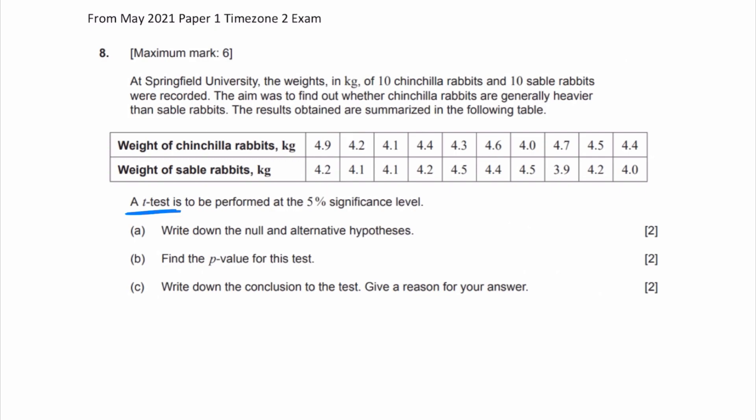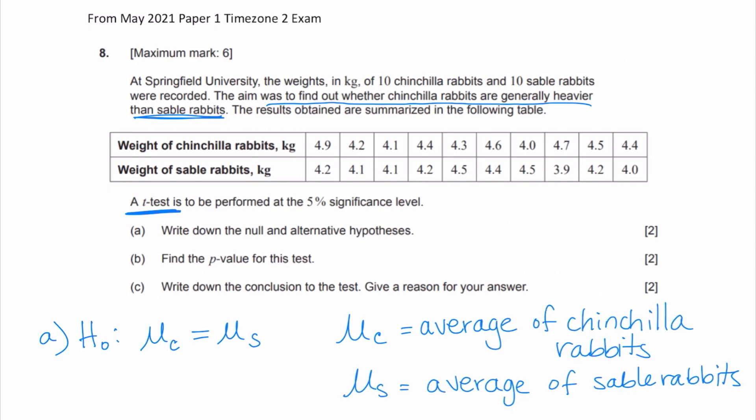You're trying to find out whether chinchilla rabbits are generally heavier than sable rabbits. So I'm going to go ahead and say my null hypothesis is that the mean of the chinchilla rabbits is equal to the mean of the sable rabbits. I'm going to identify that this is the average of the chinchilla rabbits and that's the average of the sable rabbits. My alternative hypothesis is going to say that the chinchilla rabbits' average is greater than the sable rabbits, because that is what the aim is trying to determine.